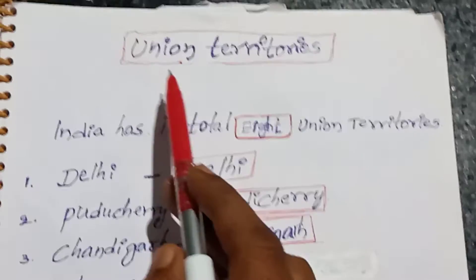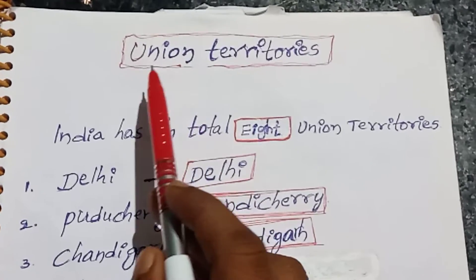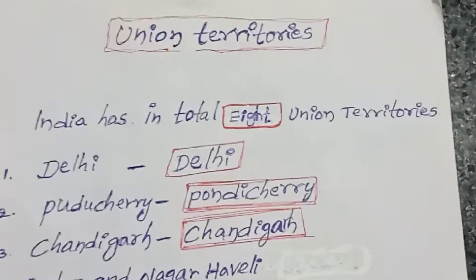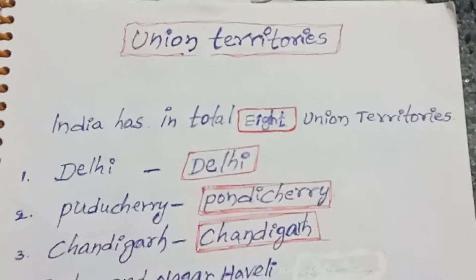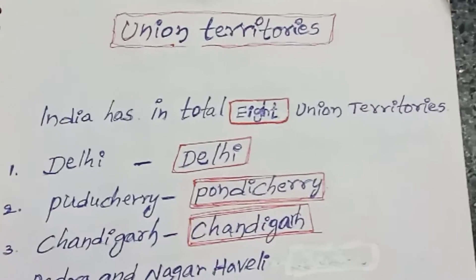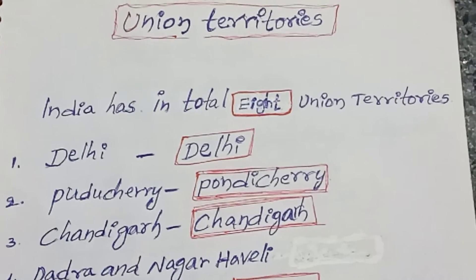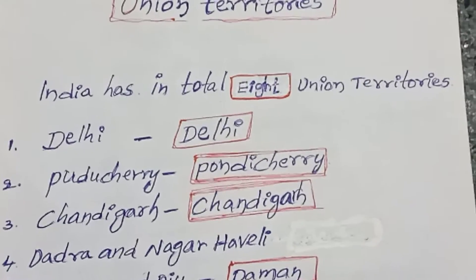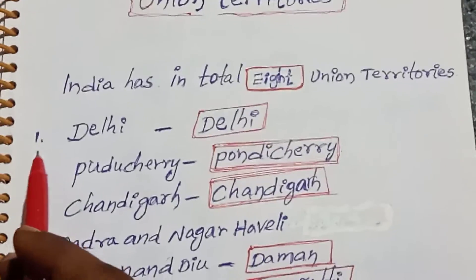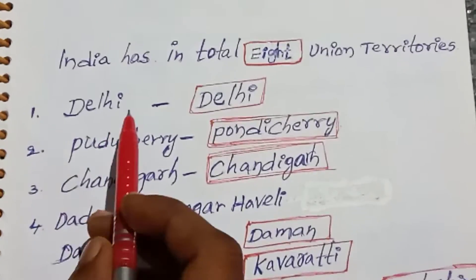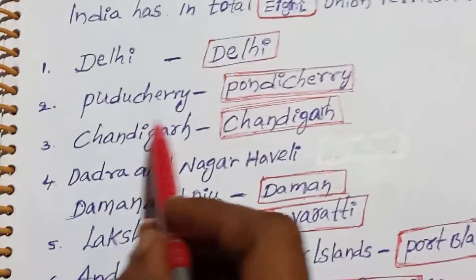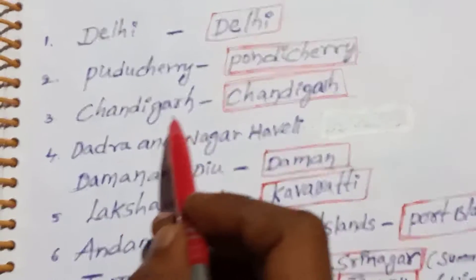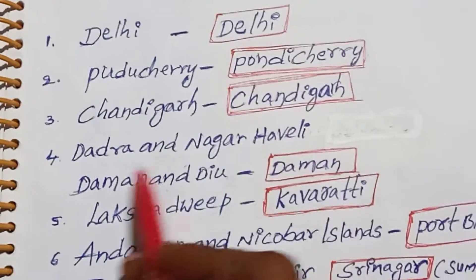Welcome back to our channel. Today we discuss class union territories. Before there were 29 states and 7 union territories, now there are 28 states and 8 union territories. The first one: Delhi, capital New Delhi; Puducherry, capital Puducherry; Chandigarh, capital Chandigarh.